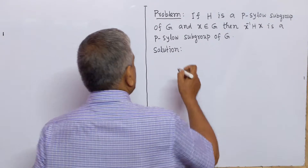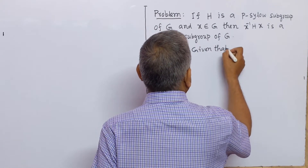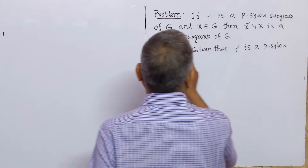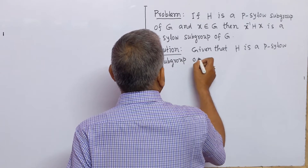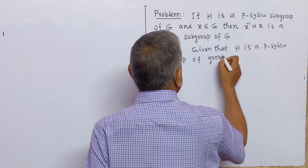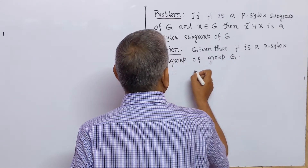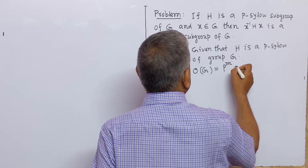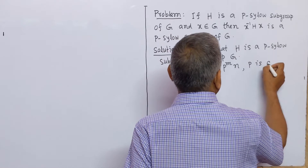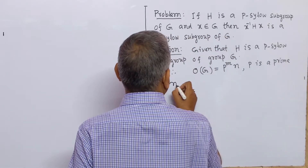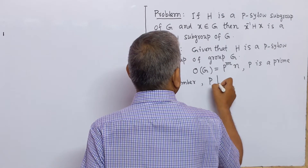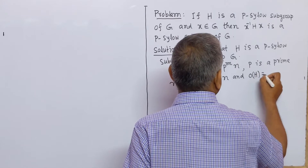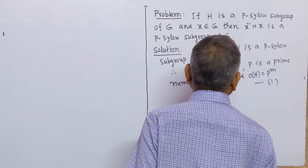We now solve this. Given that H is a Sylow subgroup of group G. Therefore, the order of G is of the form p to the power m times n, where p is a prime number, p does not divide n, and the order of H equals p to the power m.